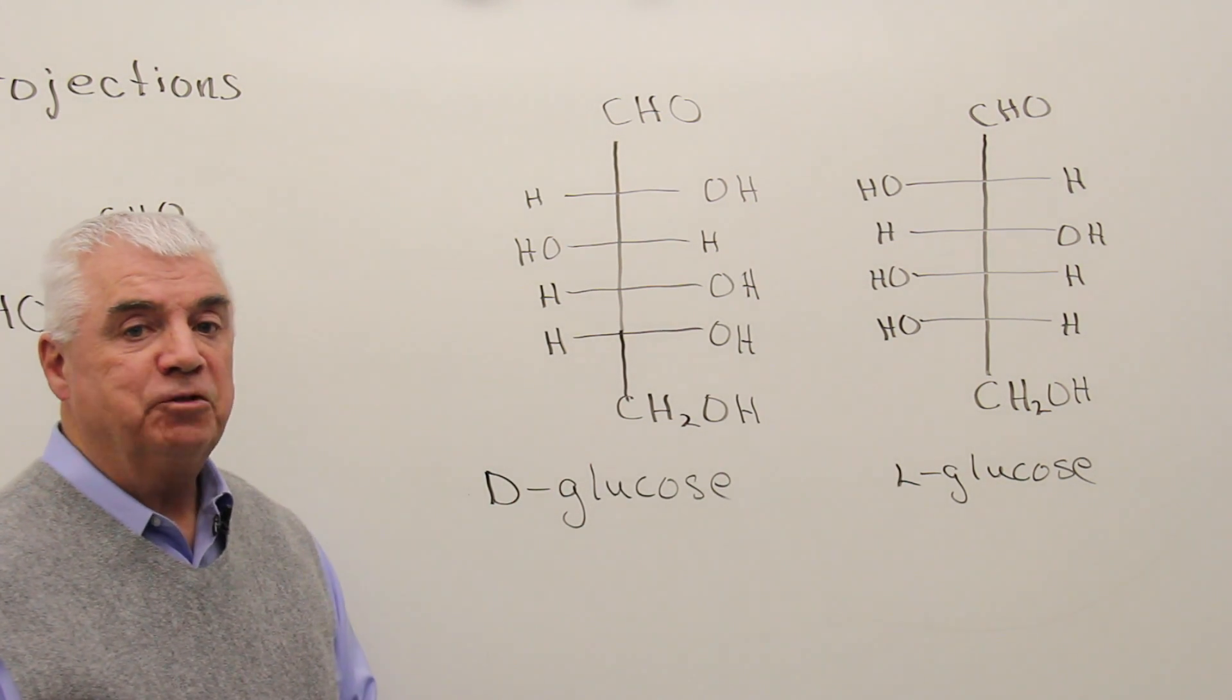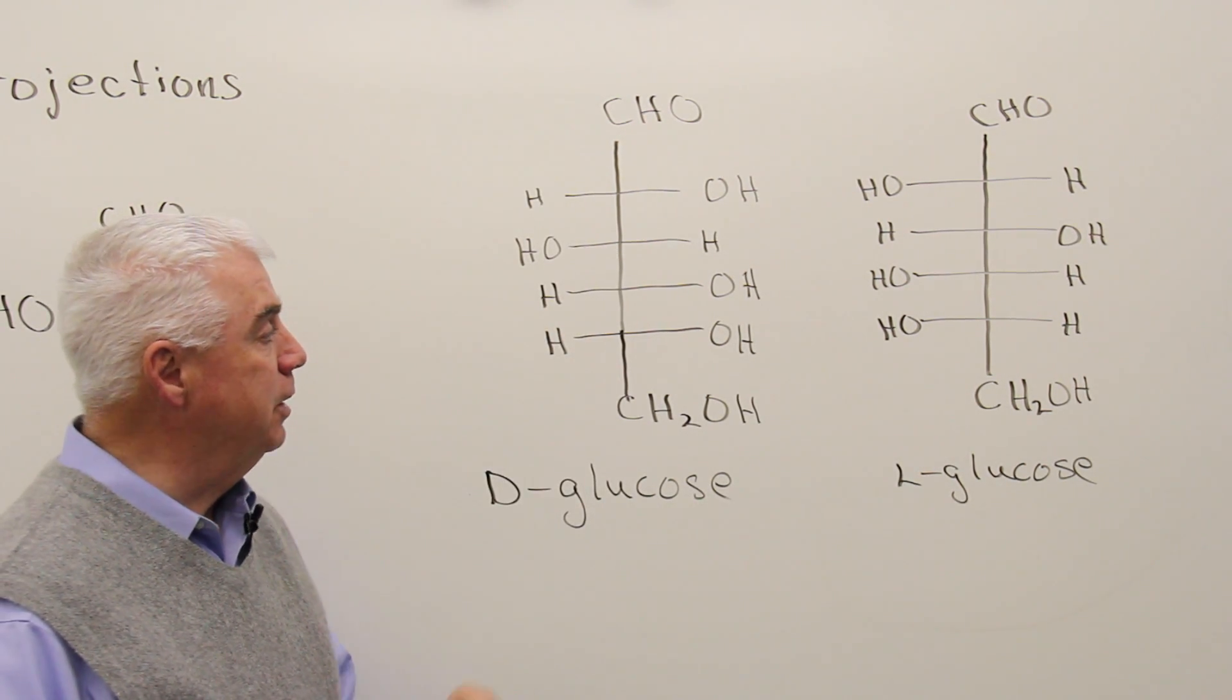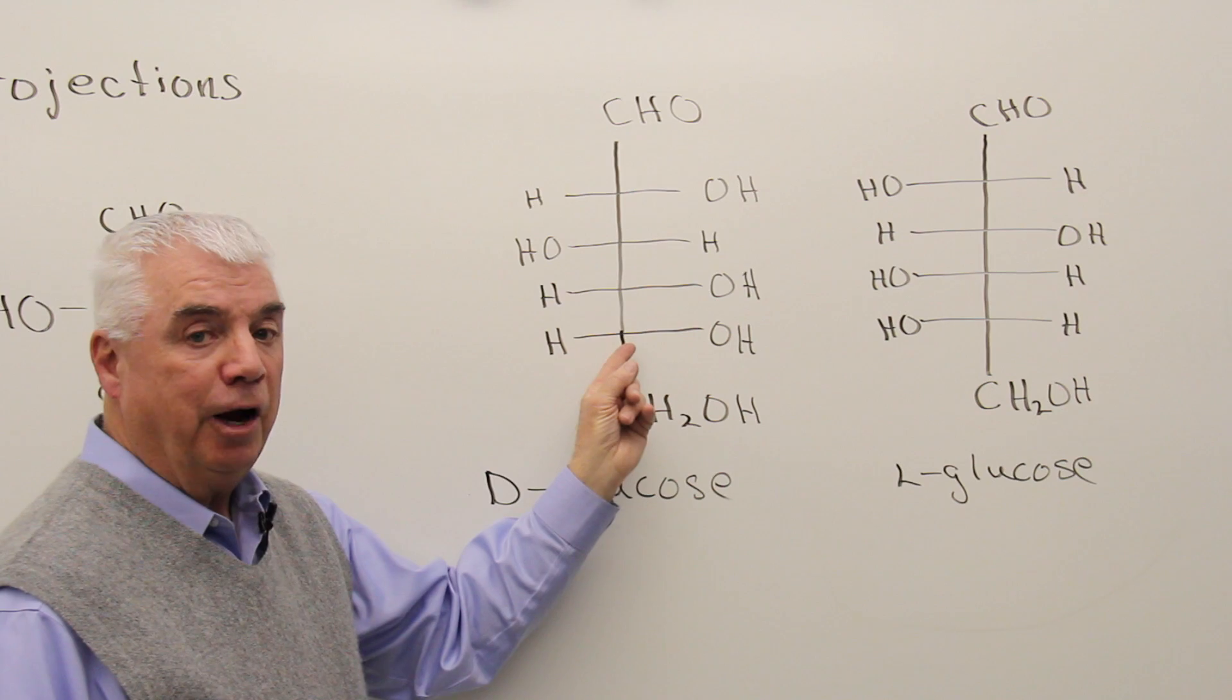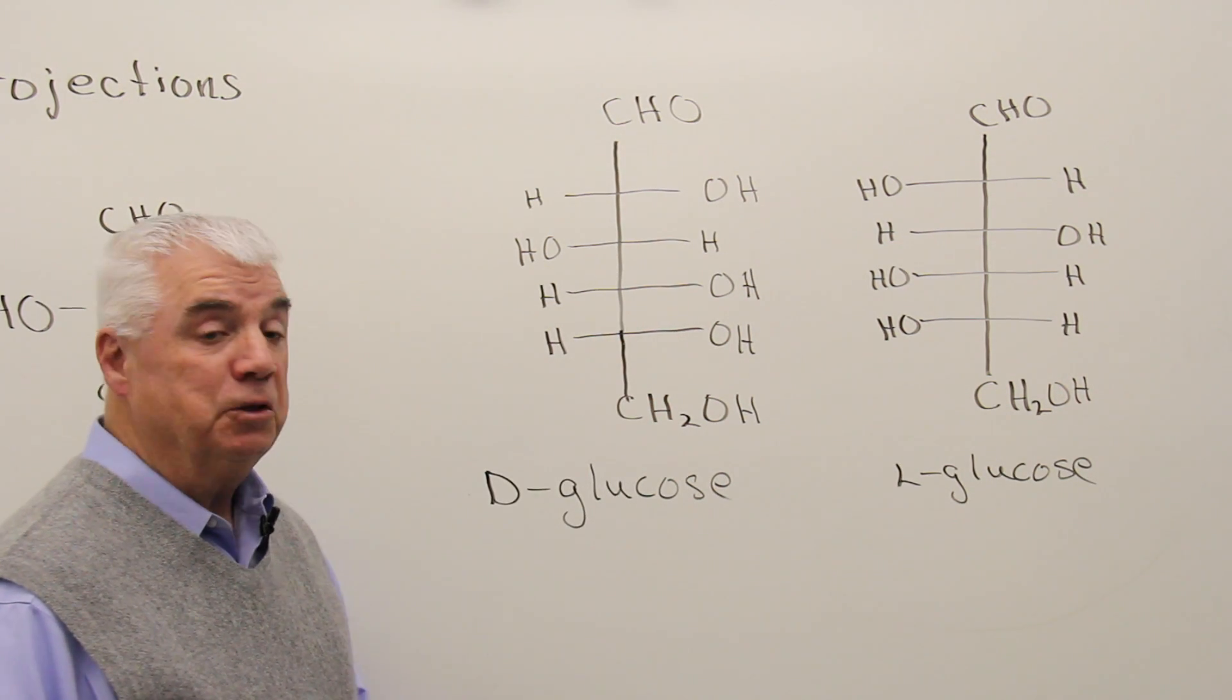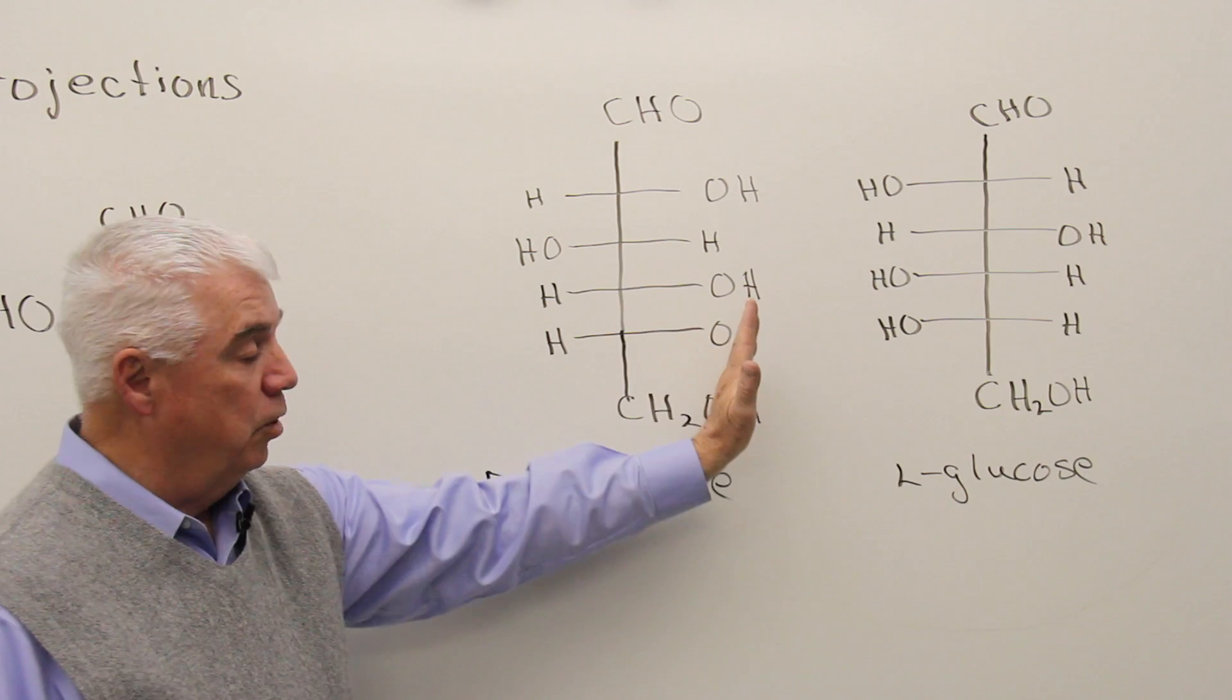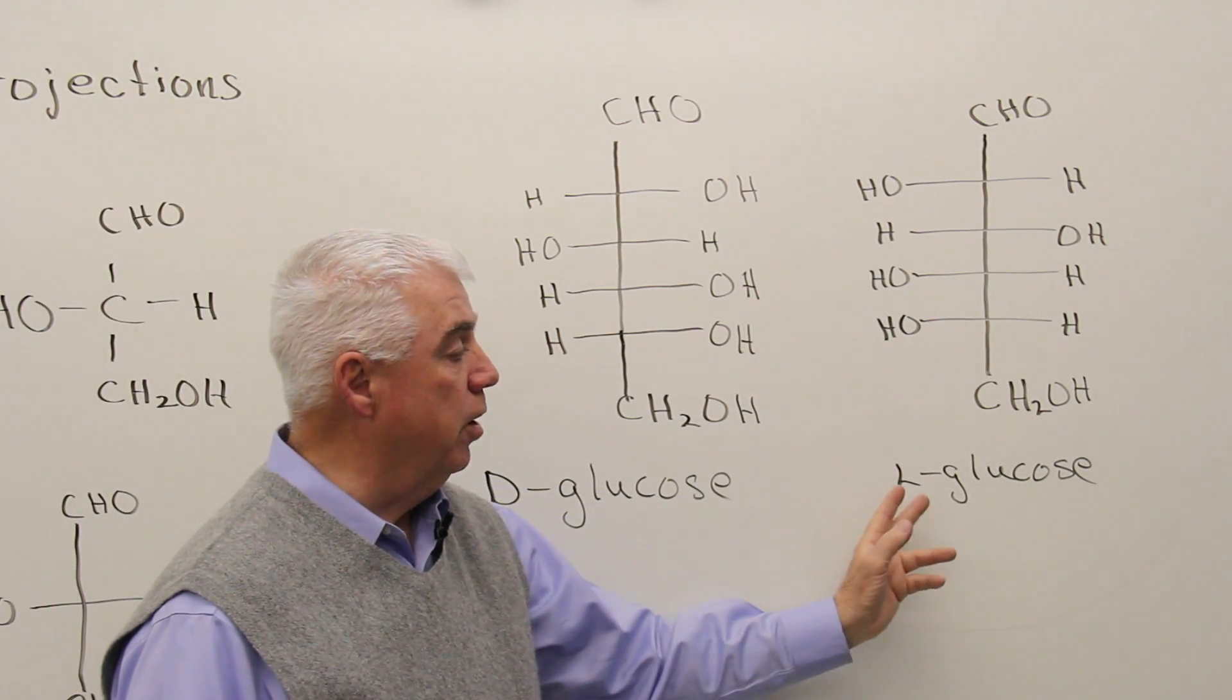And we designate D and L in a structure that has more than one chiral carbon by looking at the bottom chiral carbon. So it's this one down here that determines whether it's D or L. OH pointing to the right, it's D, D-glucose. If the OH points to the left, it's L-glucose.